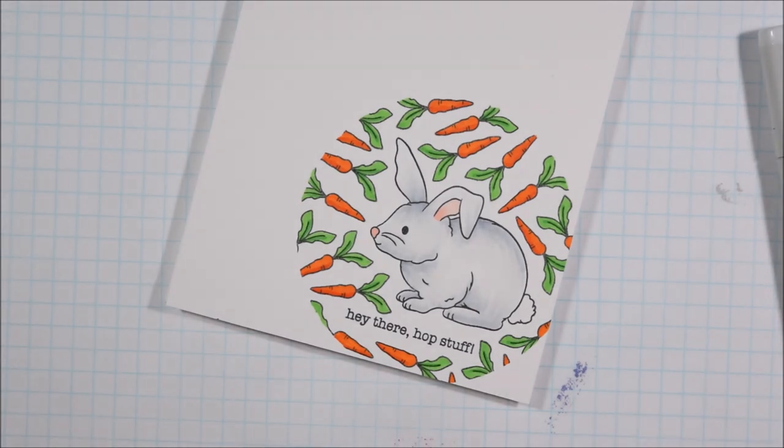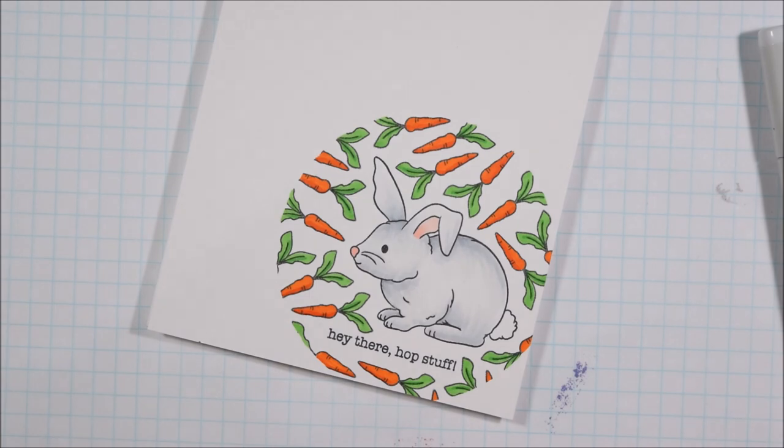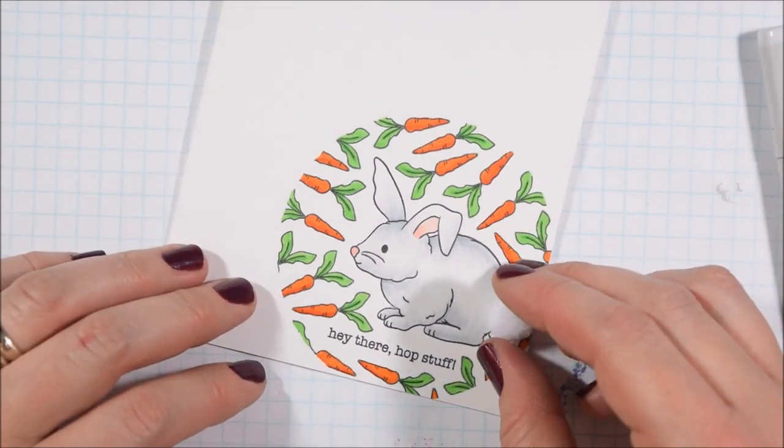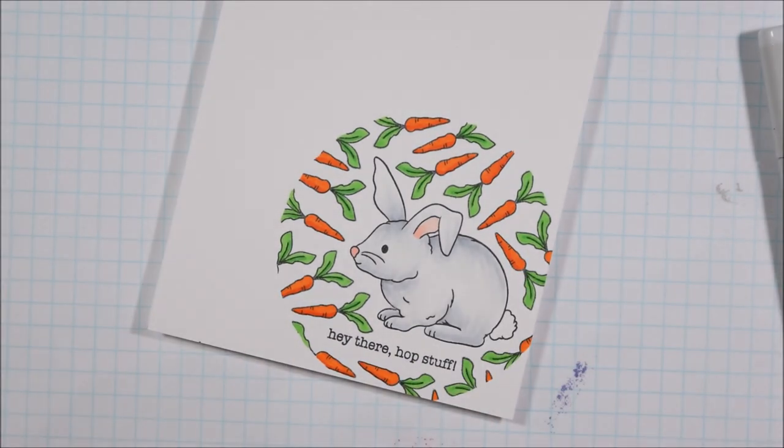But yeah, I don't have a light source. It's not a scene card. So that's one of the reasons I don't always create scene cards because then you have to consider all of that sort of stuff. And it's just, I like to just add some dimension with my shading. That's my main goal. So I did want to use one of these pom-poms because it's such a cute idea to have a little fluffy tail.